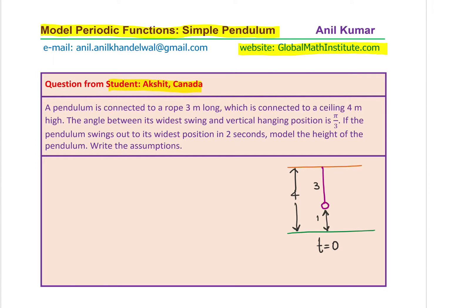The question says, the angle between its widest swing and the vertical hanging position is pi by 3. That means, let us say this is the widest swing. In that case, the angle given to us right here is pi by 3. At this instance, we get the maximum height.